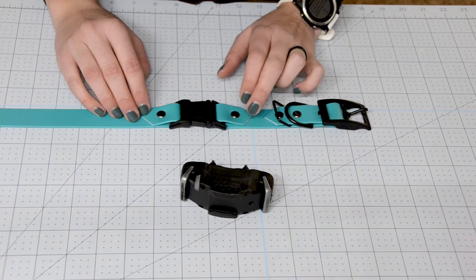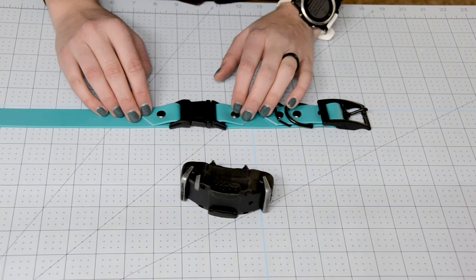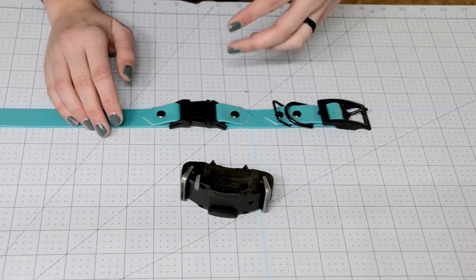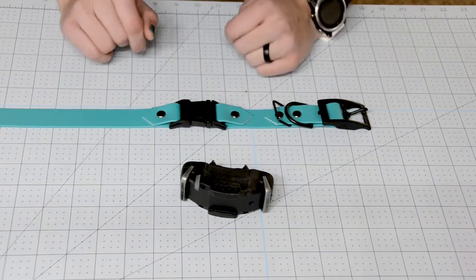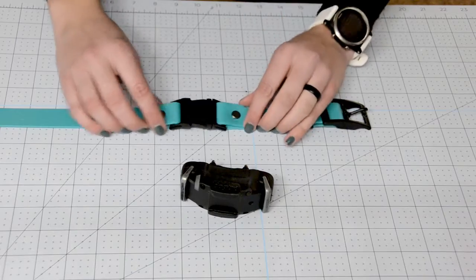We have a sizing guide on our website for all the big names like DogTra, Educator, Sport Dog, and even Garmin, so take a look at that before you purchase. This here is a one inch width and we've got the Dogtra 1900.